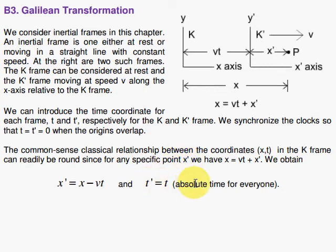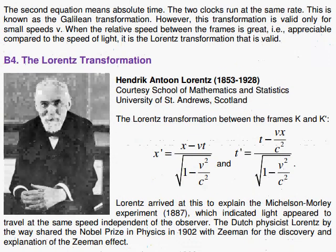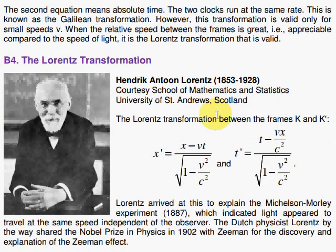You can also add another equation here—the height y here is the same as the y prime, so you could say y prime equals y. Now this transformation is the classical one and we'll see later in this chapter that we have to modify things for special relativity.